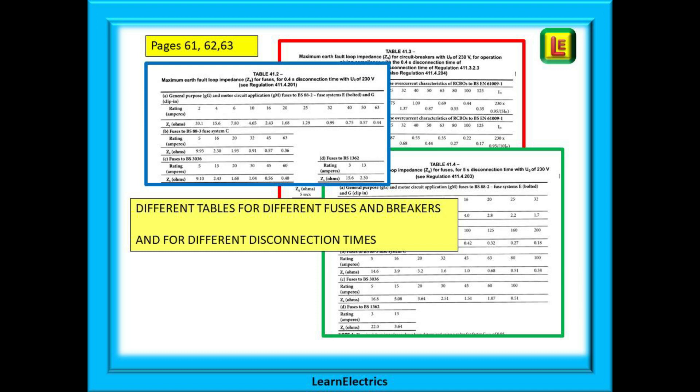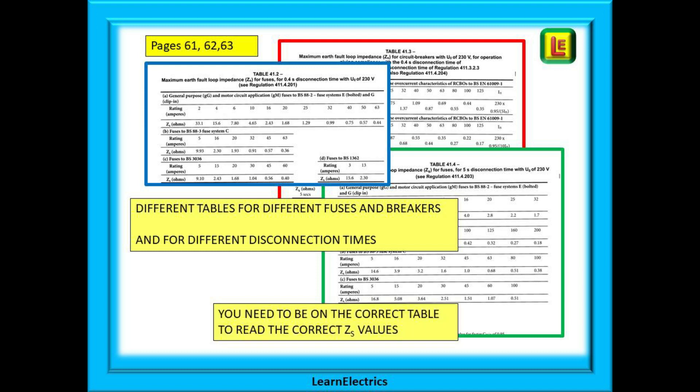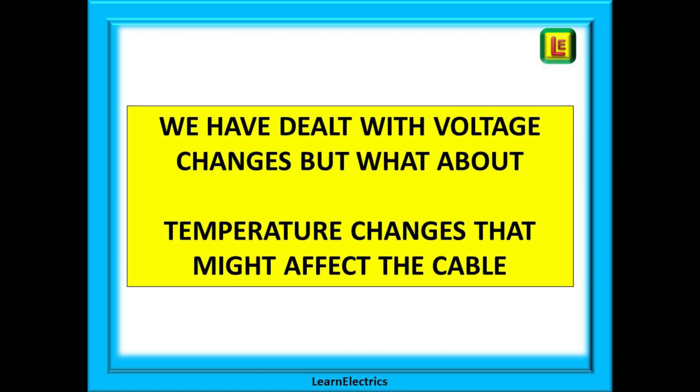Because they are listed in a table in the book, these values are sometimes called tabulated values. When looking up values of ZS in the tables it is very important that you use the correct table for your answers. The same size fuse may appear in tables for different disconnection times and the ZS will be different in each case.